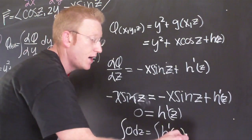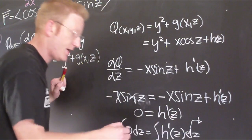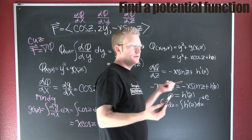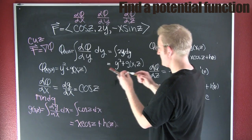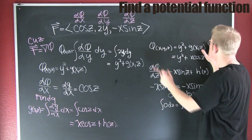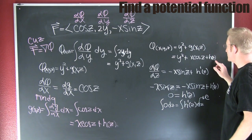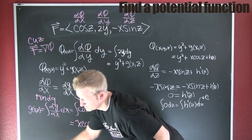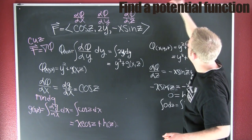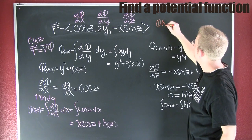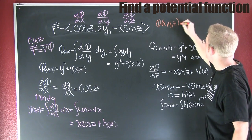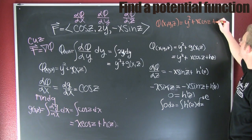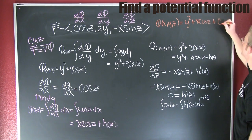That gives me a constant. So now that we have all of our pieces, I want to get my final answer. The last step was to find H, and H turned out to be just a constant. So in the end, my potential function φ(x, y, z) = y² + x·cos(z) + C. And there we found the potential function.